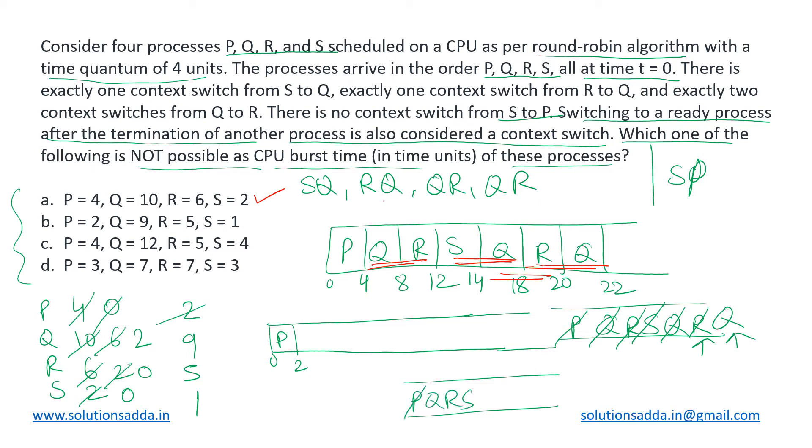Then we have Q up to 6 because 2 plus 4, 6 which is the time quantum. And now this reduces to 5, pop and push. Then we have R up to 10. This becomes 1, pop and push. Then S up to 11. Just pop it. No need to push again because it is 0 now.